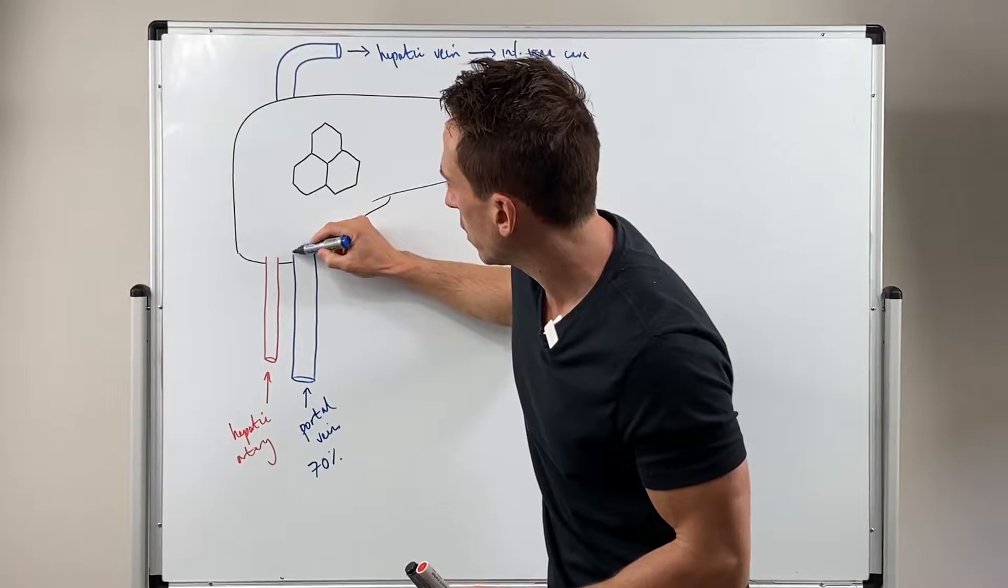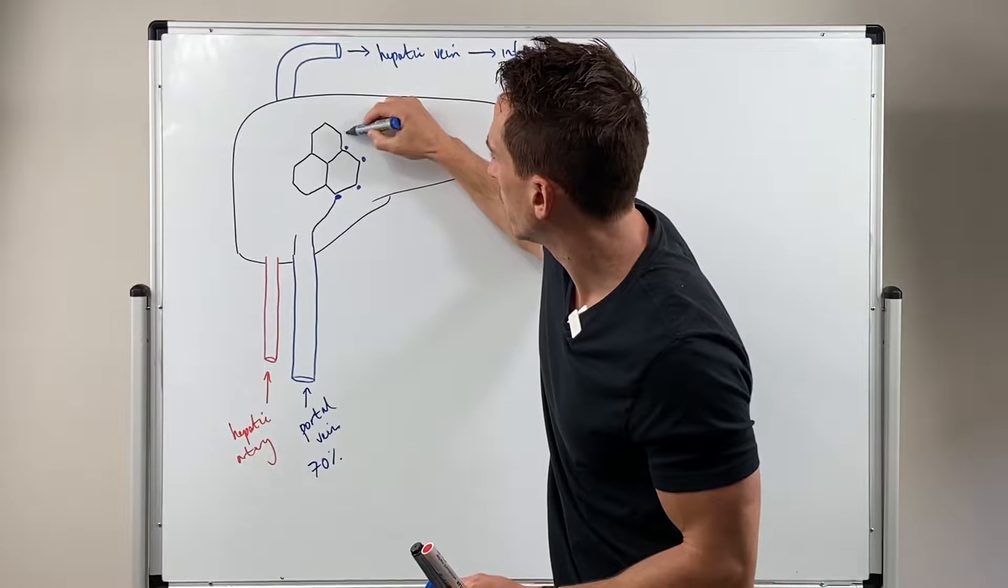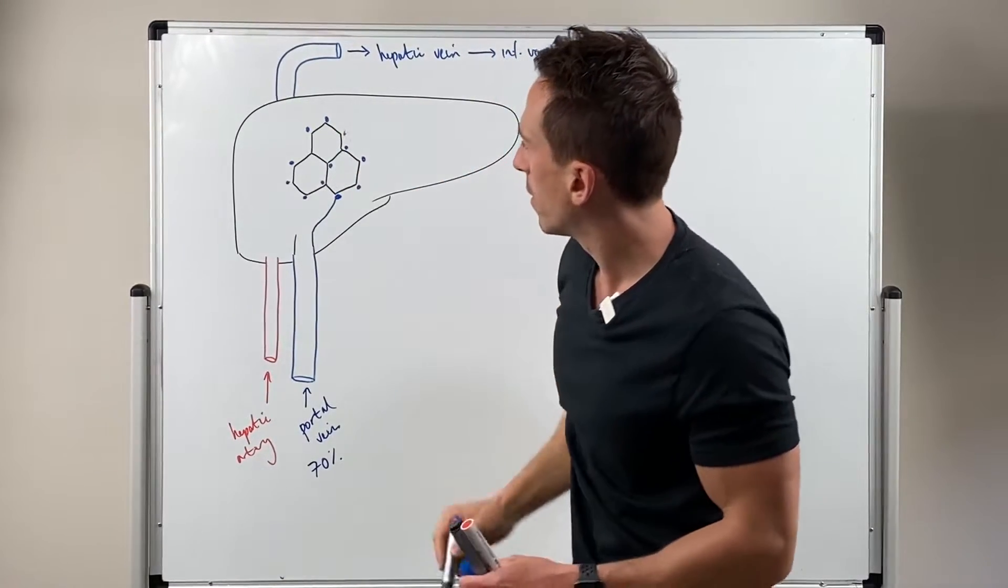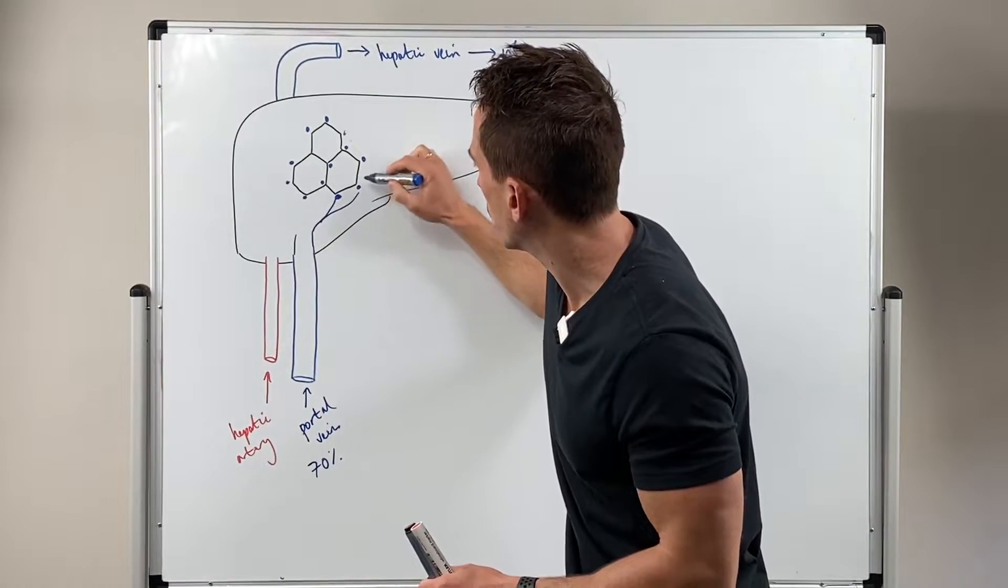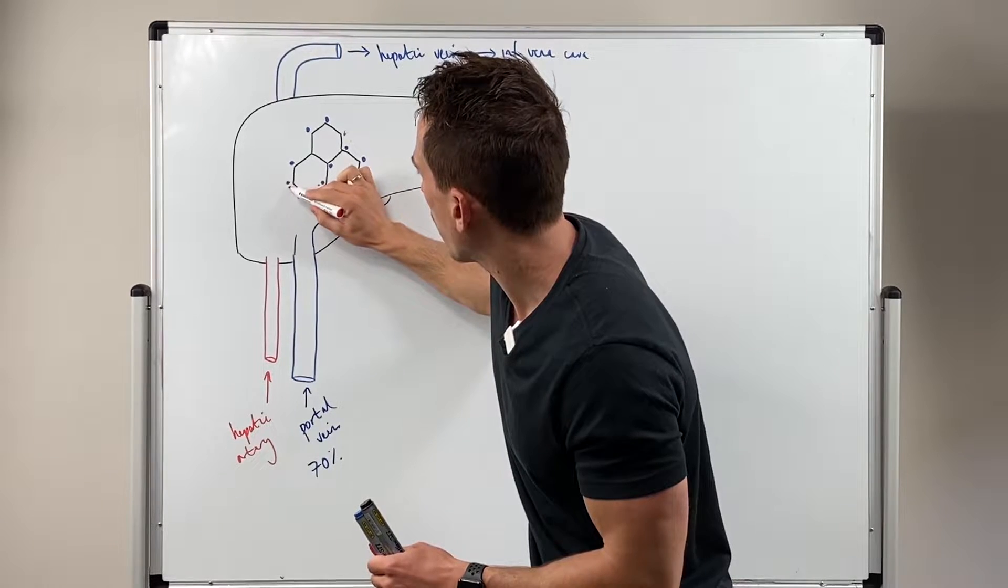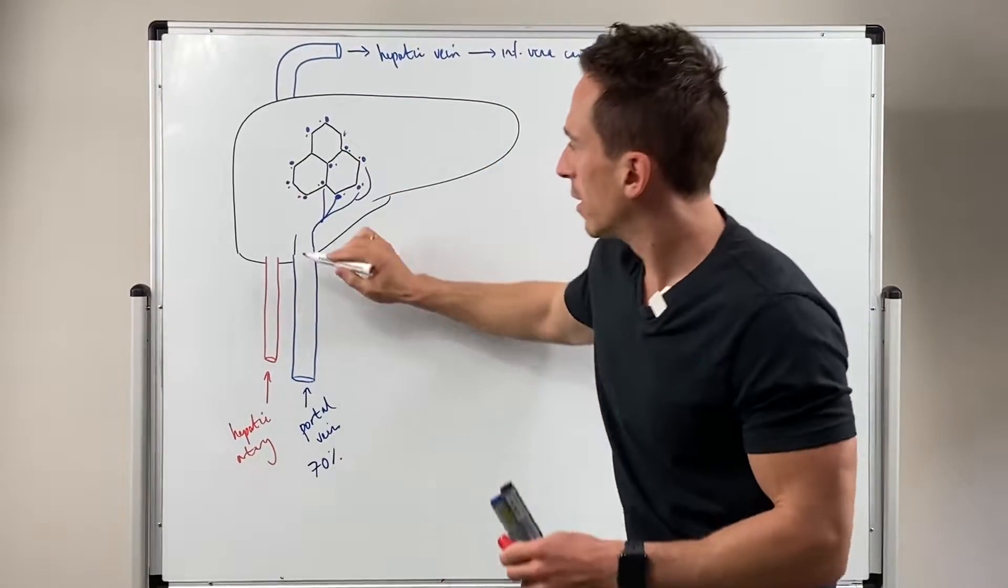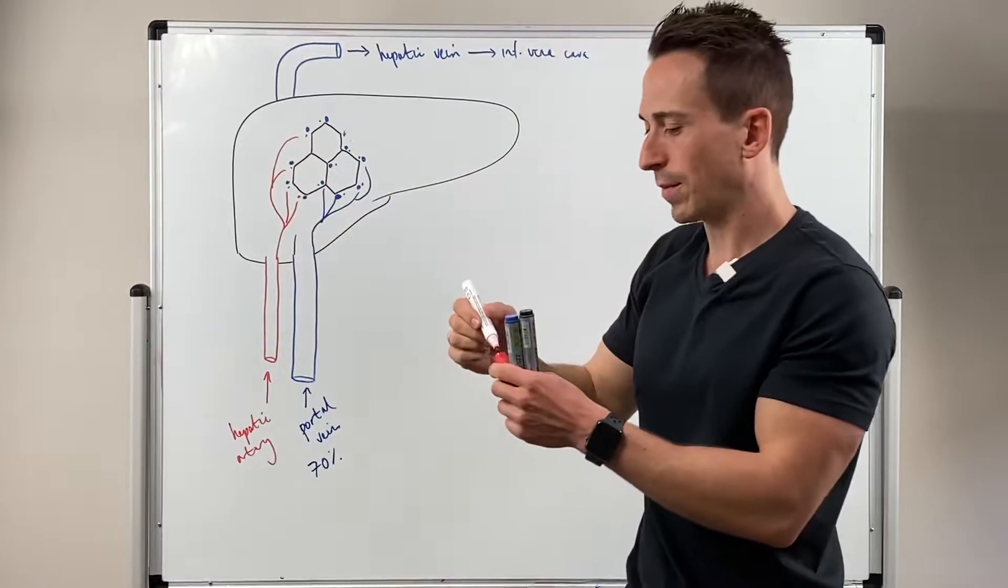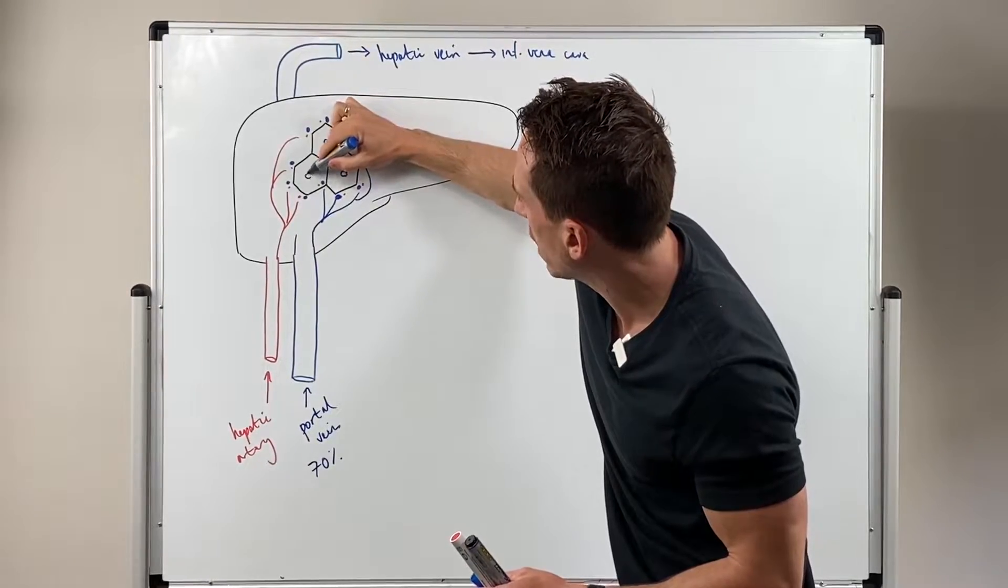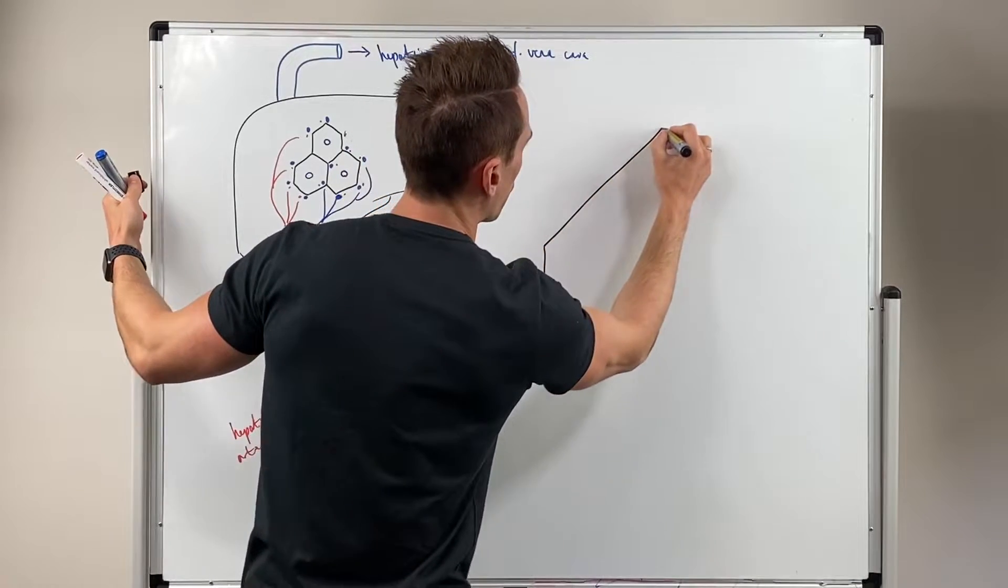The portal vein will come in and branches of the portal vein will go to every single corner of each of these liver lobules. You're going to have a dedicated branch of the portal vein going to every one of these liver lobules. The same actually happens with the hepatic artery—you're going to have a branch of the hepatic artery at every corner of these liver lobules as well. Right in the middle of these lobules is a central vein, and this is where both the hepatic artery and the portal vein drain into.